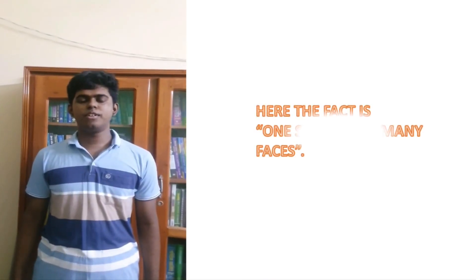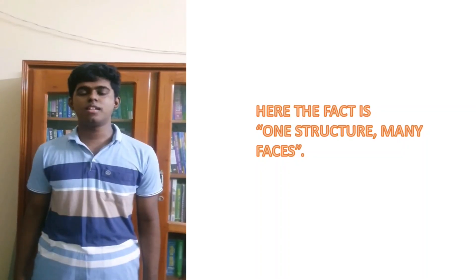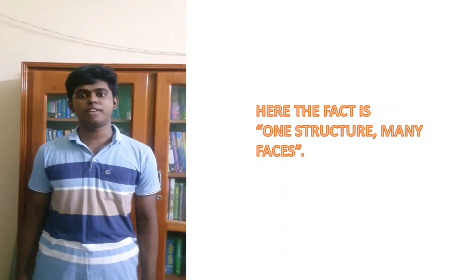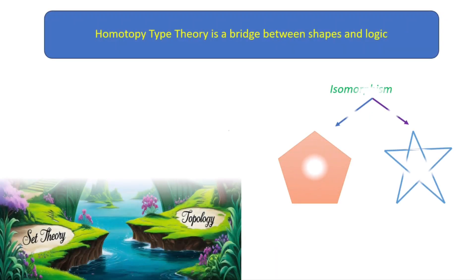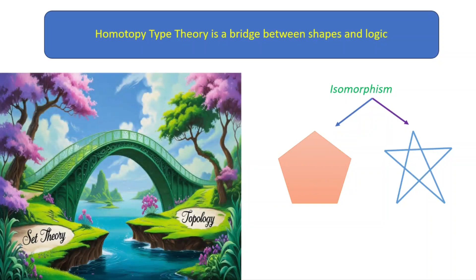Homotopy type theory introduces a new concept named univalence axiom, which says isomorphic structures can be identified. Here, structures that look different but are essentially the same can be identified. It builds a bridge between algebra, topology, and logic.